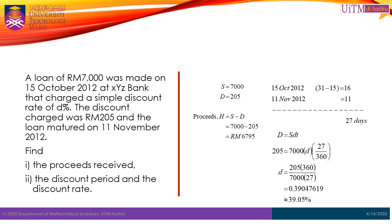Thus, capital letter S is equal to 7000. The next given information is the value of 205, which is the discount amount charged in RM. This is the value of the bank discount amount, which gives us capital letter D equal to 205. So we have S equals 7000 and D equals 205.